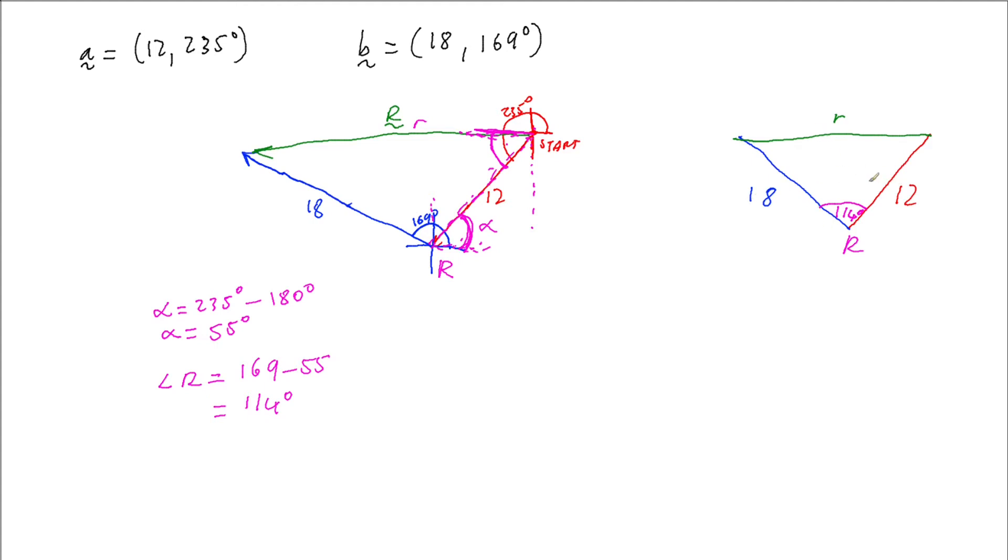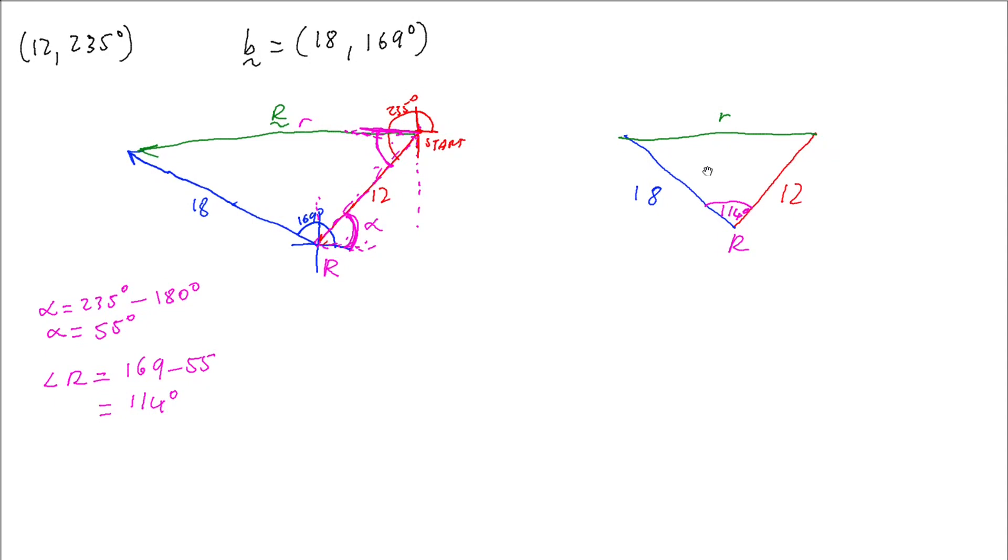And the first one I can use is the cosine rule to help us get the magnitude of R. So if I want to get the magnitude of R I can use our cosine rule. R squared equals A squared where this is A and this is B plus B squared minus 2AB cosine angle R. And so I can get 12 squared plus 18 squared minus 2 times 12 times 18 cos 114.